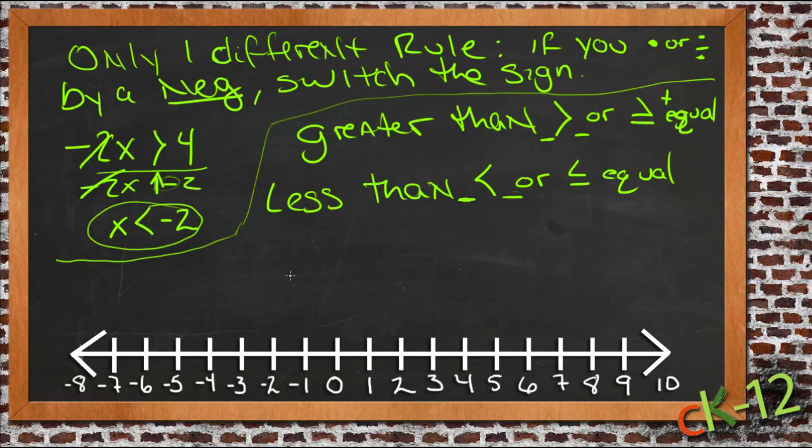To graph inequalities, all you need to do is graph what the variable can be. So if you're given the statement x is greater than 7, all you need to do is find 7 on your number line and check to see if it can be equal to 7 or if it's just greater than or less than. In this case, it cannot be equal.